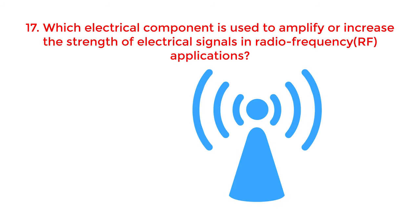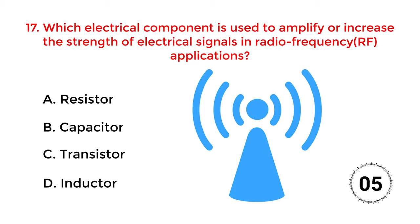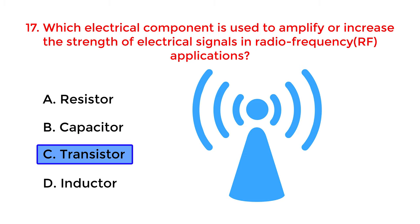Which electrical component is used to amplify or increase the strength of electrical signals in radio frequency applications? A. Resistor. B. Capacitor. C. Transistor. D. Inductor. The correct answer is option C: Transistor.